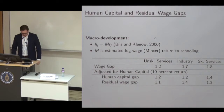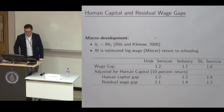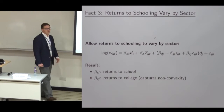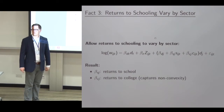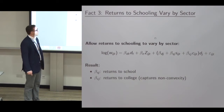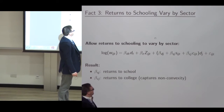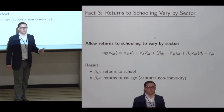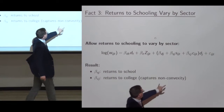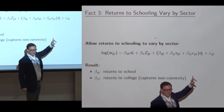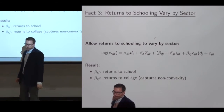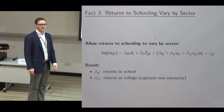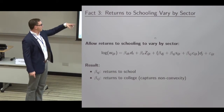That doesn't seem very plausible in the United States — people seem to get off farms just fine. So we want to go a step further and document that the return to schooling varies a lot by sector in almost all of our economies. To establish that, I run the same Mincer wage regression but now let the return to schooling vary based on which sector you're in. There's a term that captures the fact that wages are a convex function of schooling in the US — the return to college years is much higher than to the first 12 years. I estimate this and plot wages as a function of schooling in all four sectors in the CPS.